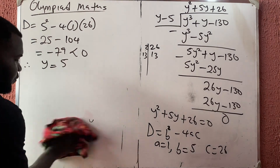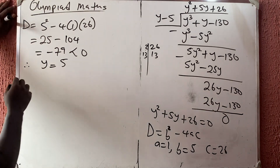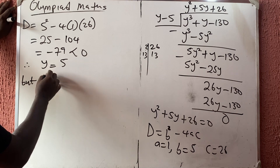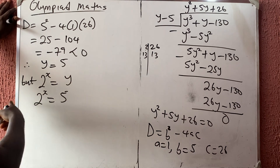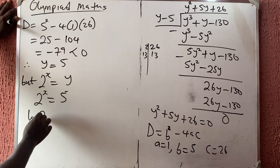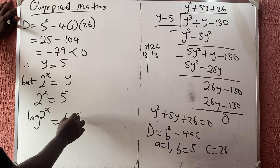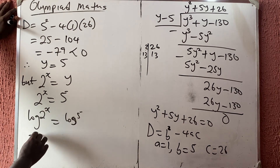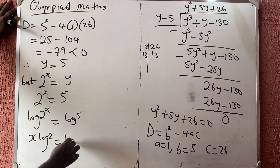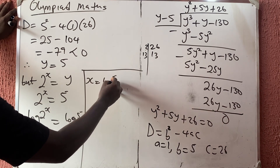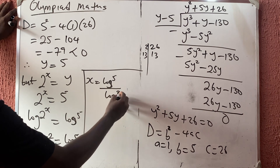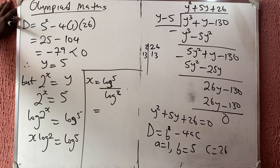We were looking for x, not y. Recall that 2 raised to power x equals y, so 2 raised to power x equals 5. Taking the log of both sides: log(2^x) = log 5, which gives x · log 2 = log 5, and therefore x = log 5 divided by log 2.